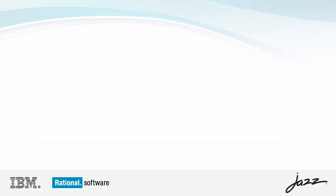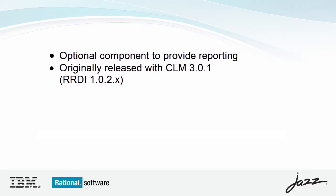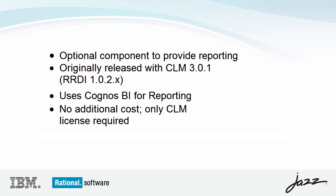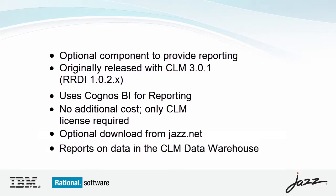Quick overview of RRDI: RRDI is an optional component to provide reporting for CLM. We originally released it with the previous CLM release, 3.0.1, that was in June of 2011, and that was with RRDI 1.0.2. It uses Cognos BI for reporting, and it's available with no additional license or cost — you just need the CLM license. It's an optional download off of jazz.net, and it reports on data in the CLM data warehouse that the CLM products maintain.